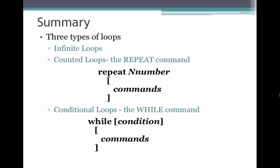So, in summary, there are three types of loops: infinite loops, counted loops, which use the repeat command, where you repeat a set of commands a maximum number of times, and conditional loops, which use the while command. The loop is repeated while the conditional statement inside the first set of square brackets is true. Thank you.